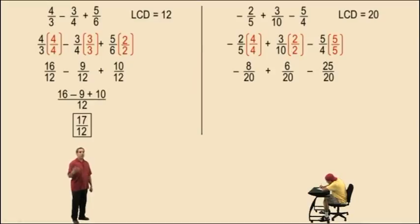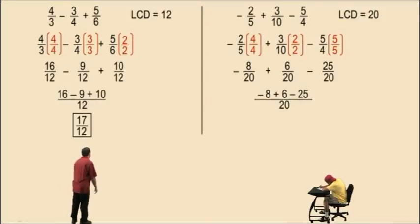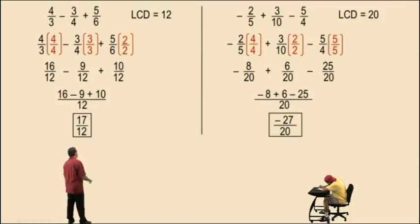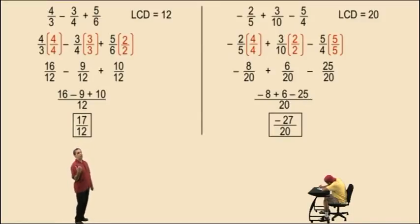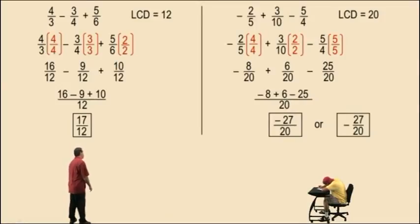Our denominators remain unchanged — we work with our numerators. So we have negative 8 plus 6 subtract 25 over 20. Performing the calculation in the numerator, we get negative 27 over 20. Because negative 8 plus 6 is negative 2, and negative 2 subtract 25 is negative 27. That is our answer — we can put the negative sign out in front and write it as negative 27 over 20.